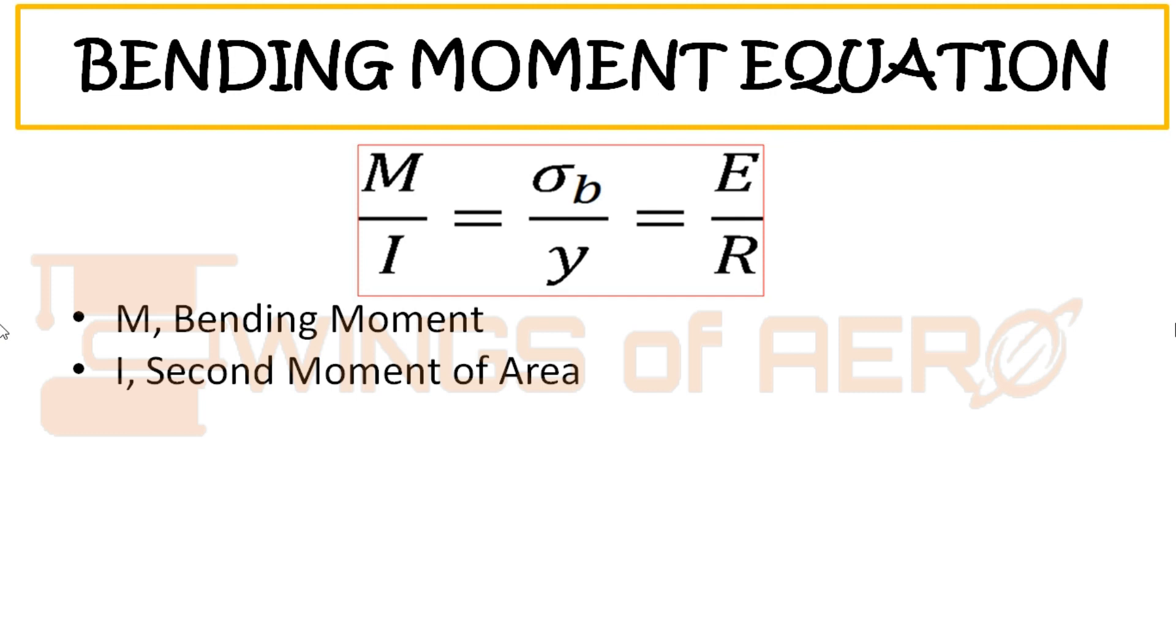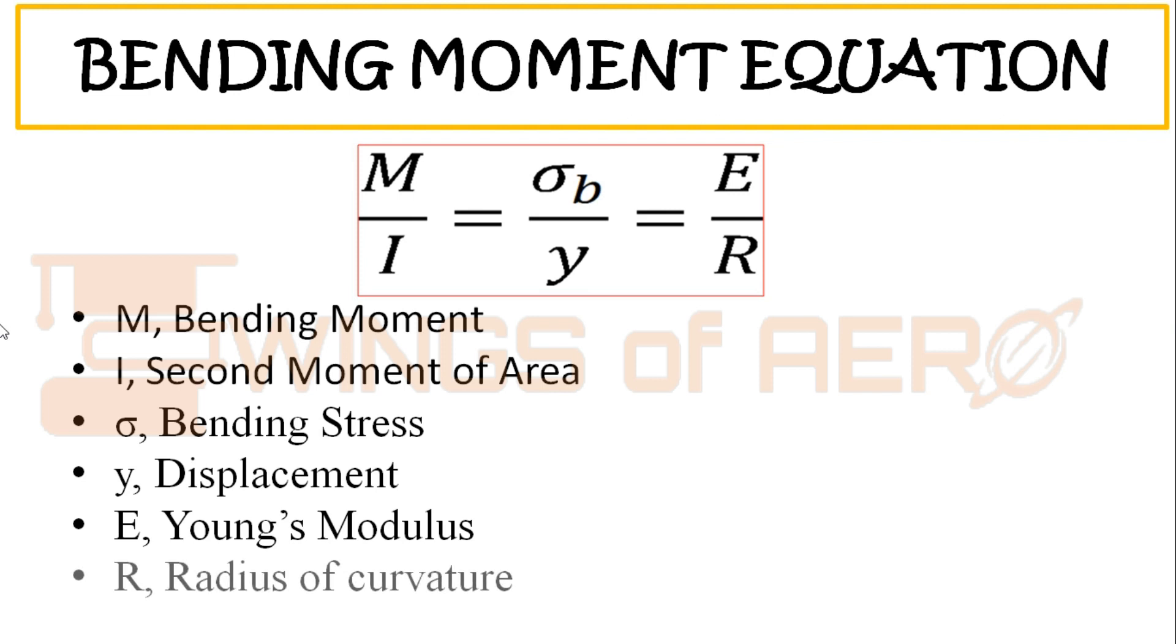E represents Young's modulus and R represents the radius of curvature when the load is applied onto the beam.